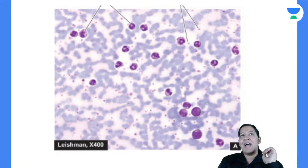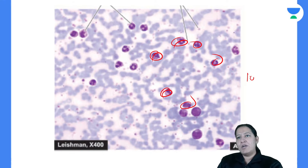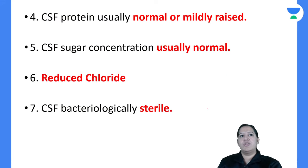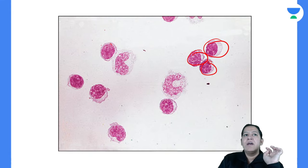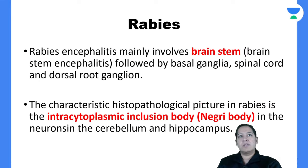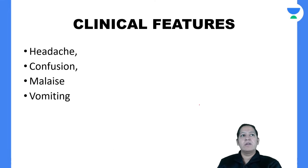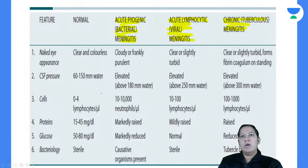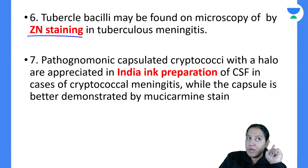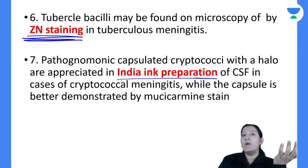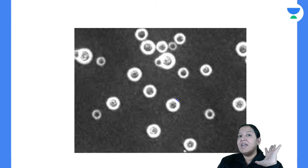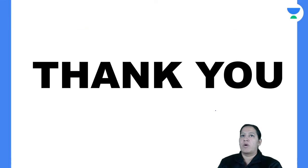On microscopy, the bacterial meningitis slide shows 10-10,000 neutrophils filling the field. The viral meningitis slide shows 10-100 lymphocytes. For chronic meningitis: ZN stain on CSF shows Mycobacterium tuberculosis as red rods; India ink preparation shows Cryptococcus — the only fungus that causes meningitis in the world — as a capsulated organism with a clear halo.